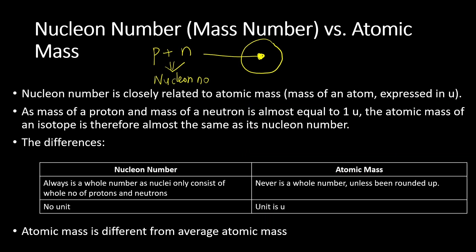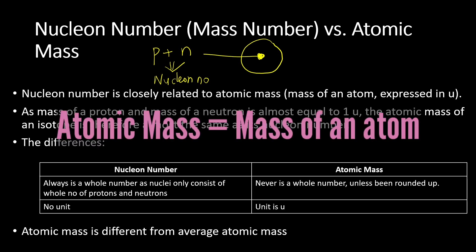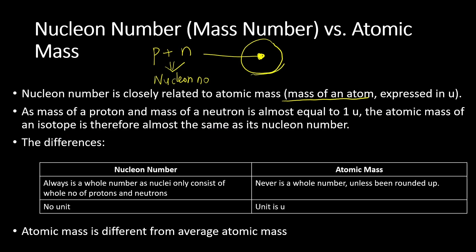How about atomic mass? Atomic mass refers to the mass of an atom — we measure it and record the mass. Remember, an atom is very light, so the mass of an atom is expressed in terms of unified atomic mass, U. So atomic mass refers to the mass of one atom, expressed in unified atomic mass units.